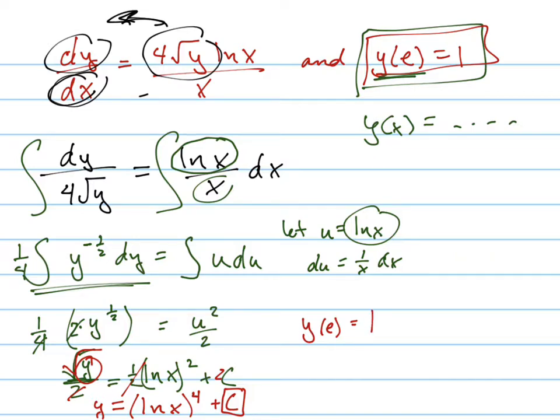They told me that equals 1, which means that would equal the natural log of e to the fourth plus c. And what's the natural log of e? It's just 1. So this is just 1 equals 1 plus c, which means c equals 0.